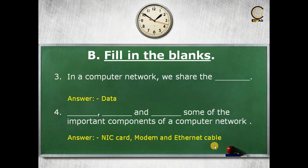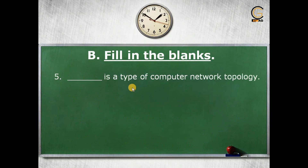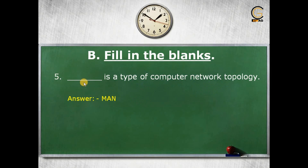The last fill-in-the-blank question: dash is a type of computer network topology. It can be a MAN, a LAN, or a WAN. For example, MAN is a type of computer network topology.